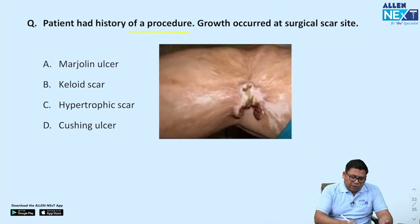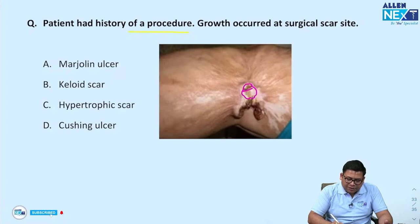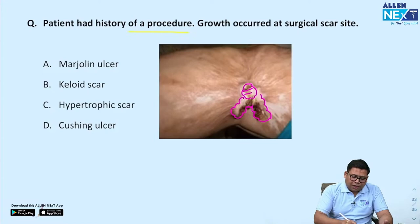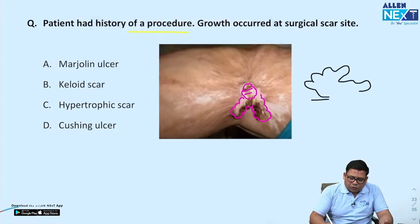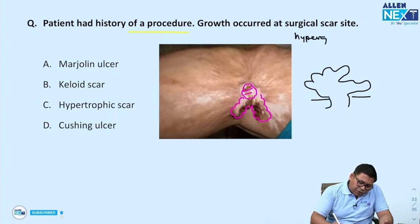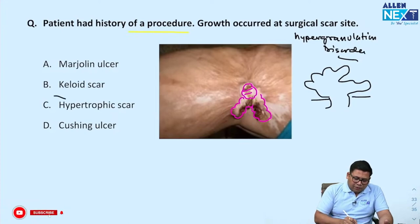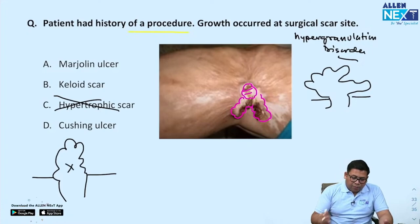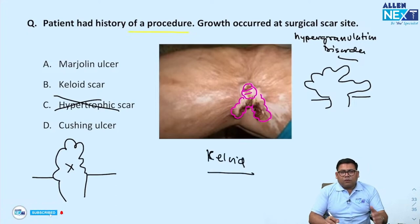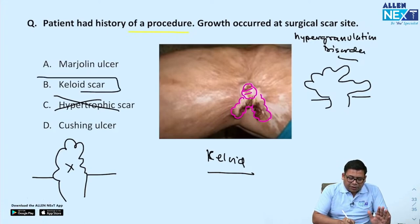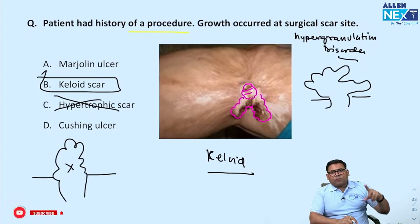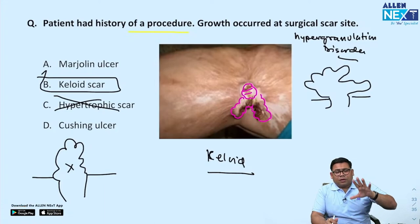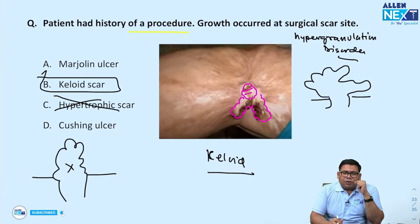Patient had surgery and post-procedure has a scar. The tissue is growing above the margin and beyond the margin of surgery — this is a hyper-granulation or keloid disorder. A hypertrophic scar grows above but never goes beyond the boundaries. A keloid always goes above and beyond the boundary. Since the scar goes above and beyond, this is a classical keloid scar. Hypertrophic scars regress in 6 to 8 weeks; keloids do not.